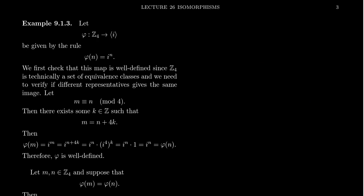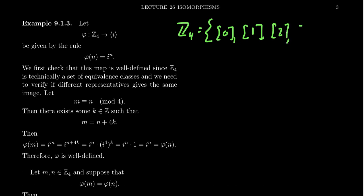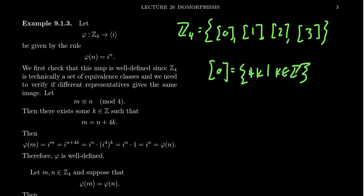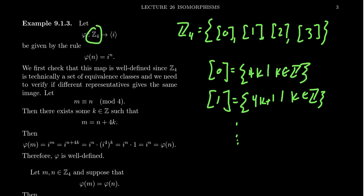Let me give an easier example to digest. Consider the cyclic group of order four, Z₄ — the group of congruence classes mod four. This is a group of order four: the congruence class of zero means all multiples of 4K, the class of one contains integers of the form 4K plus one, and so on. We often abbreviate these as 0, 1, 2, and 3 — just using the representative to denote each congruence class.